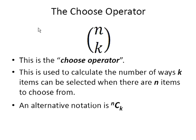This is how we denote it — it's a symbol with brackets containing a term n and a term k. This is used to calculate the number of ways k items can be selected when there are n items to choose from. There is also an alternative notation where we write n superscript C subscript k, which is an alternative way of writing it.